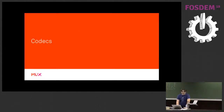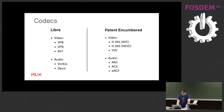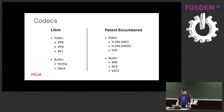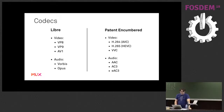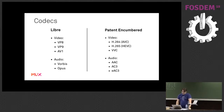Starting with codecs, where I'll spend most of the time - I've gone down the major codecs and divided them into what I would consider a Libre codec and what I would consider a patent-encumbered codec. In the Libre codecs, we've got things like VP8, VP9, and the newer AV1. We've got Vorbis and Opus for audio codecs. On the patent-encumbered side, we've obviously got all the MPEG video codecs, as well as AAC, which is MPEG's audio codec, and then AC3 and EAC3, which are Dolby audio codecs.